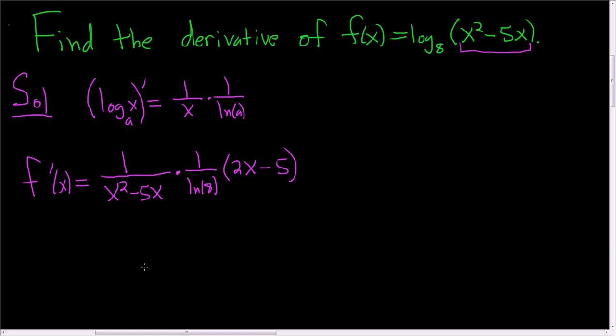And that's pretty much it. We could rewrite this as 2x minus 5 over, and then let me put the natural log of 8 out here in the front, and then here we have x squared minus 5x.